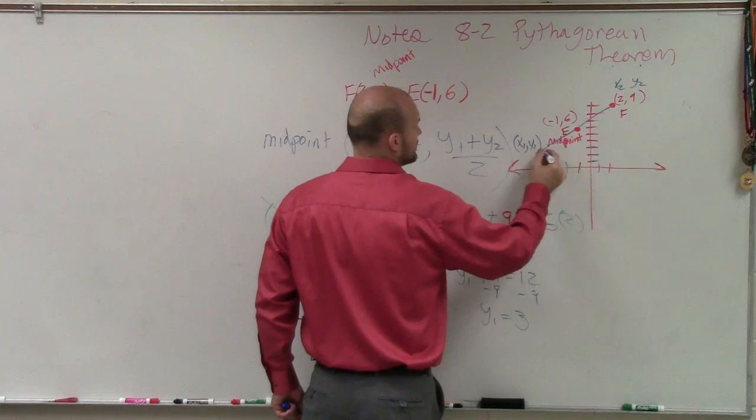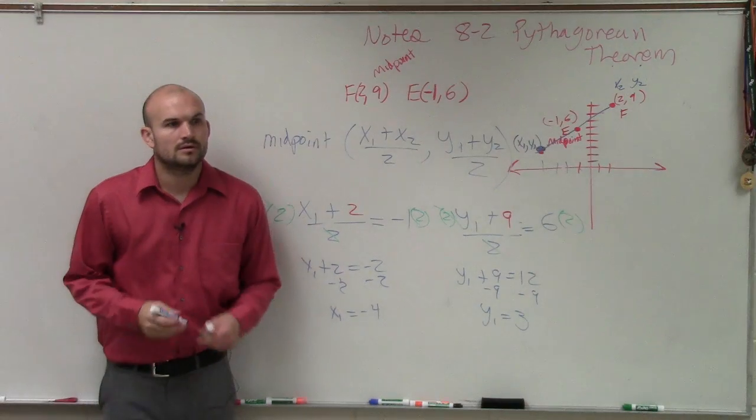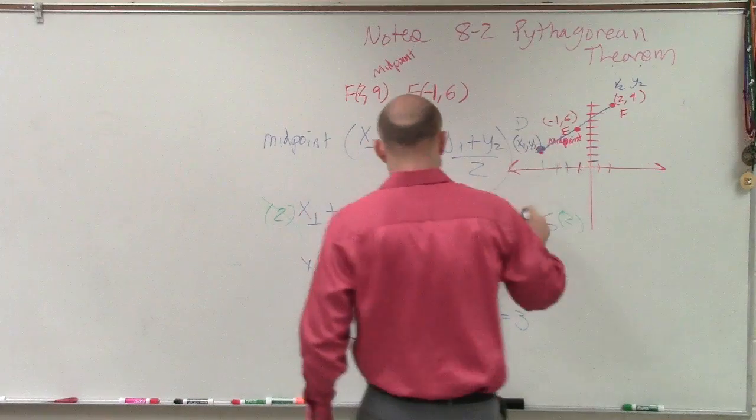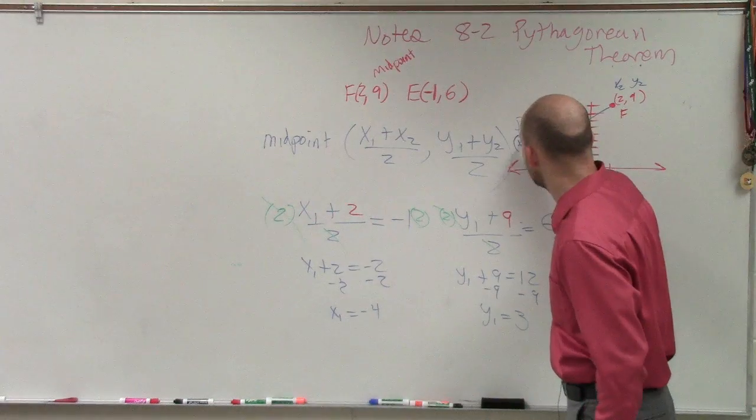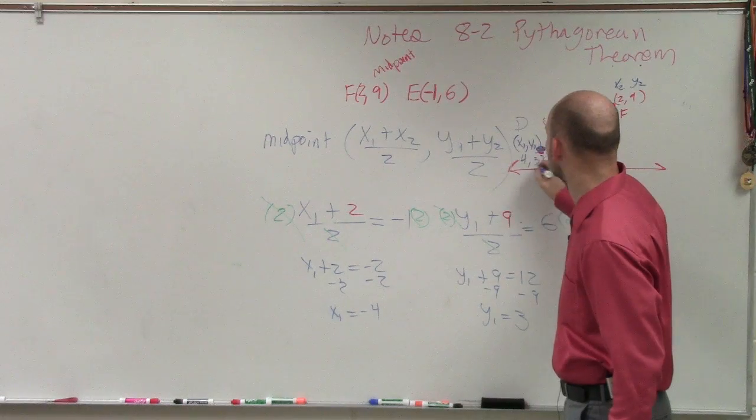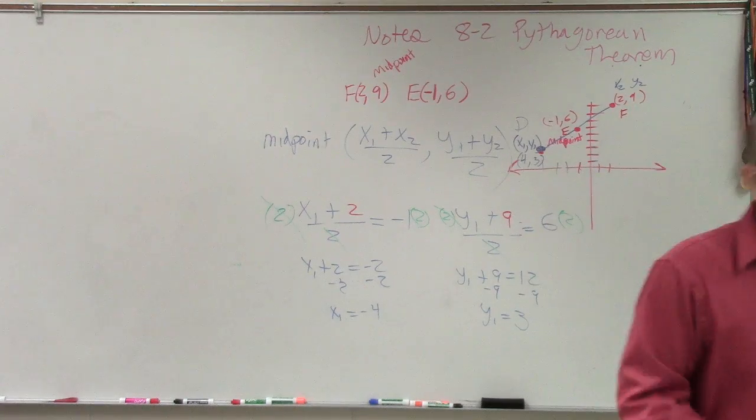You guys see it? So therefore, my point, which I'm going to call D, has the coordinate points of x1, which is 4, and y1, which is 3. Anybody have any questions? No? OK. Very good.